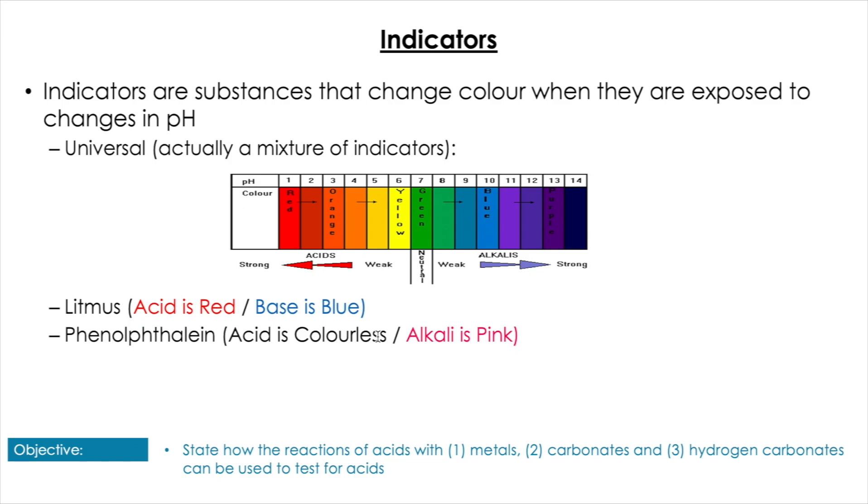Before we look at naming salts, I wanted to give one little note on indicators. We're going to look at this in more detail later in the unit, but indicators are not used to determine the pH. They are merely used to determine if there has been a change in pH, i.e., an indication of that change. So just bear that in mind. You've got examples of these in your data booklet.